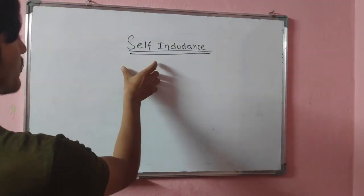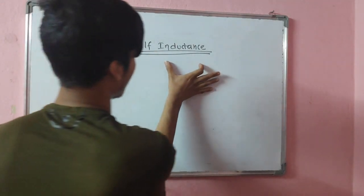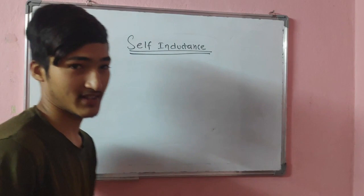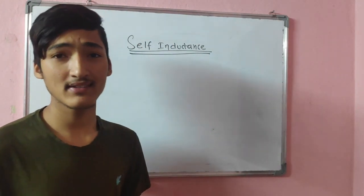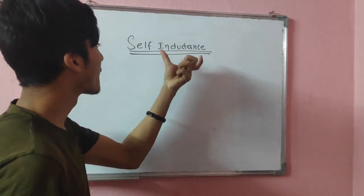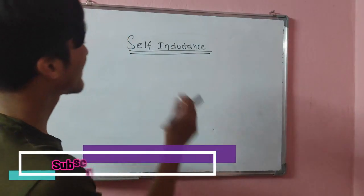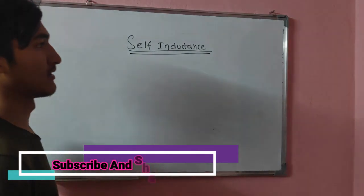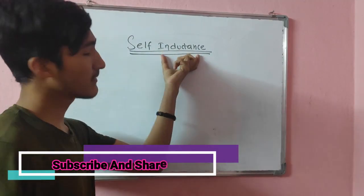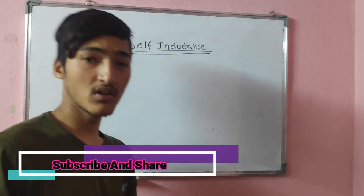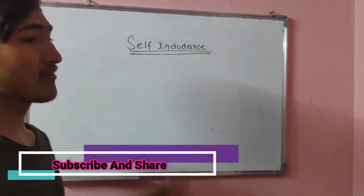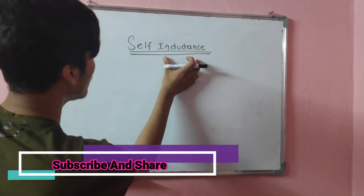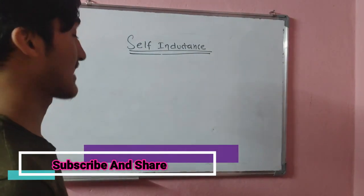Self-inductance is composed of two words: self and inductance. Inductance is simply the property of a conductor to produce an EMF by the change in the flow of current. Once again, it is the property of the conductor to produce EMF by the change in the flow of current.